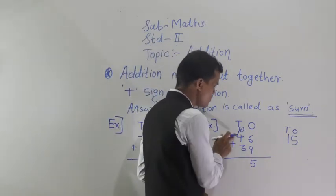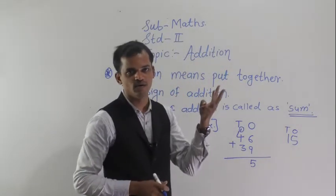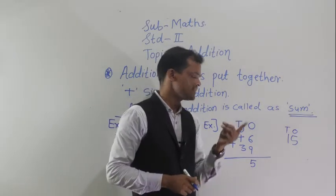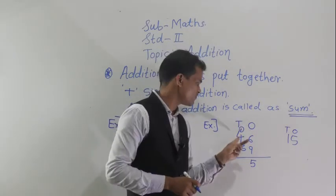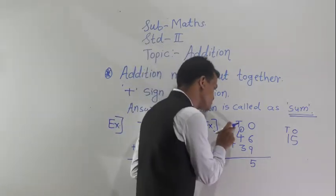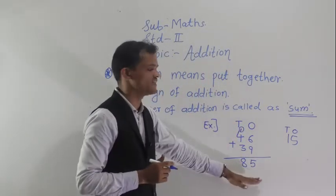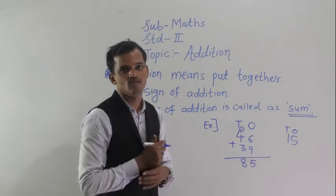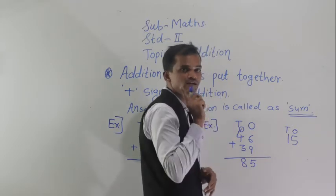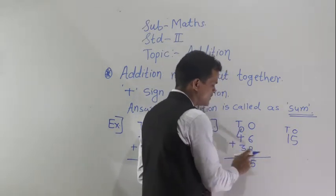Now at the tens column: 4 plus 3. After 4, count 3 fingers — 5, 6, 7. So 4 plus 3 equals 7, and 7 plus the 1 carry forward equals 8. This is an example of carry forward. So 85 is the sum of 46 and 39.